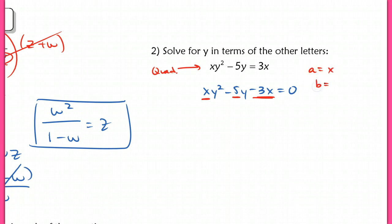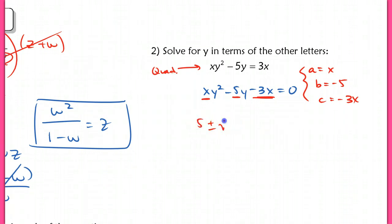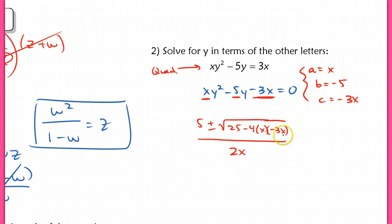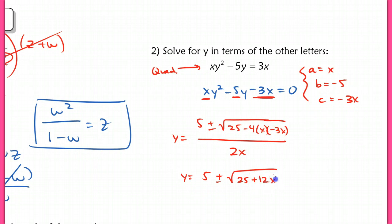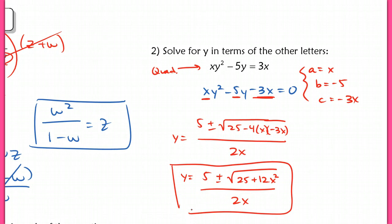So instead of trying to factor this, I'm going straight into the quadratic formula. Using these as a, b, and c, I have: 5 plus or minus the square root of 25 — which is b² — minus 4 times a (which is x) times c (which is negative 3x), all over 2 times a (which is x). It looks weird because you're not used to seeing a variable inside the quadratic formula, but these are the solutions for y. Simplifying: 5 plus or minus the square root of (25 plus 12x²), all over 2x. This is as far as you go — this is y solved for in terms of the other variables.